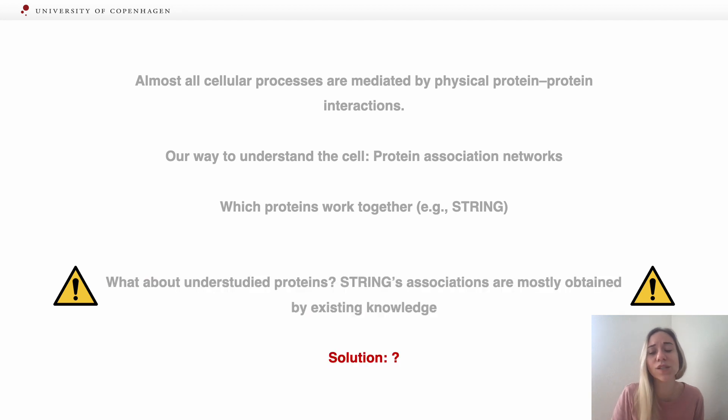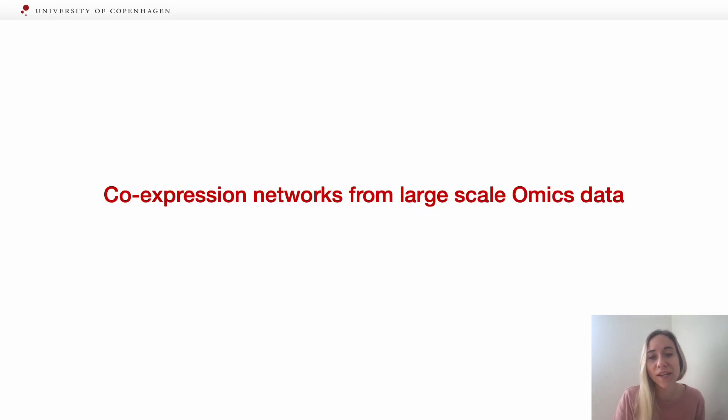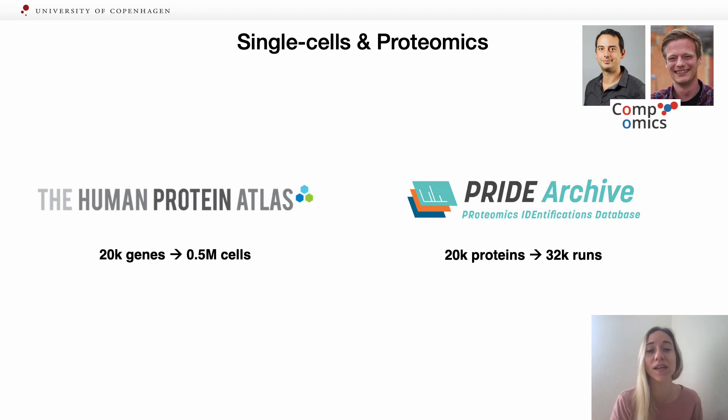So what is the solution? What is the most unbiased set we have in our hands today to create networks that lack the literature bias? The answer that we gave is co-expression networks from large-scale omics data.